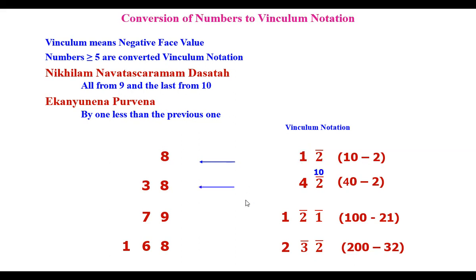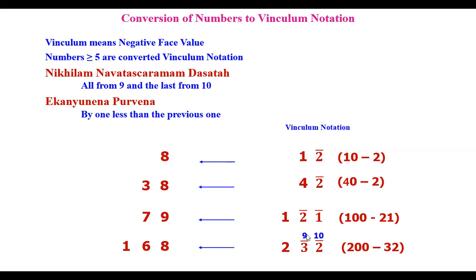Similarly, converting 4 bar 2: 10 minus 2 is 8, and 4 minus 1 is 3 — giving 38 in decimal. For another example: take 10 and 9 here; the Nikhilam principle applies. 10 minus 1 is 9; 9 minus 2 is 7; one less — 1 minus 1 is zero. This number, when converted to decimal system, gives 79. Then: 10 minus 2 is 8; 9 minus 3 is 6; 2 minus 1 is 1 — giving 168.